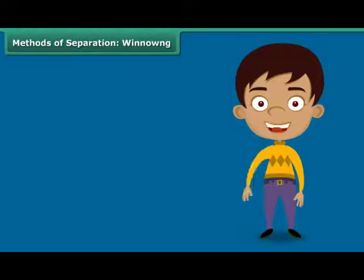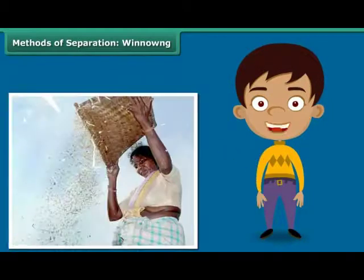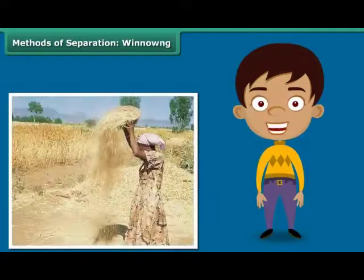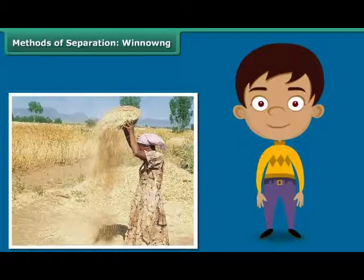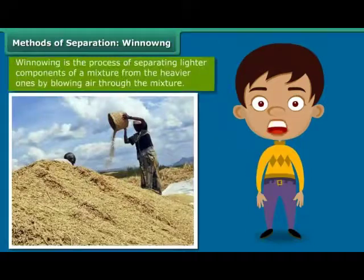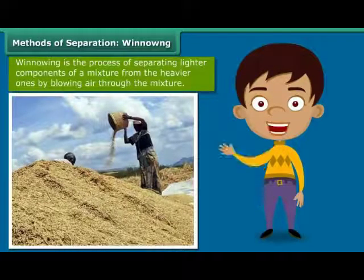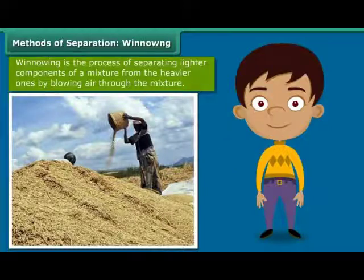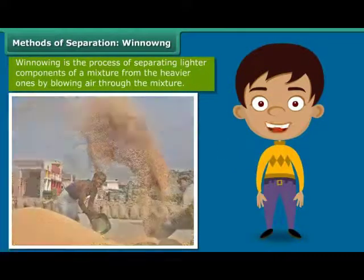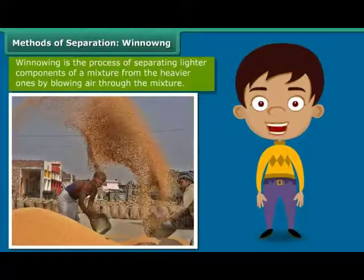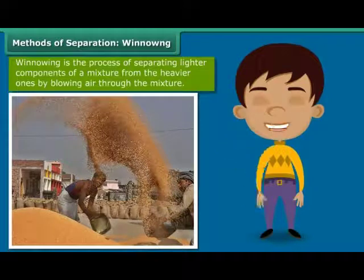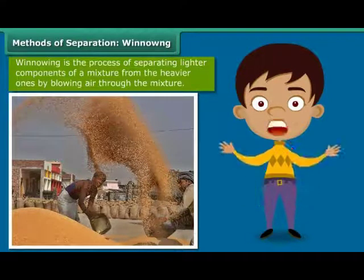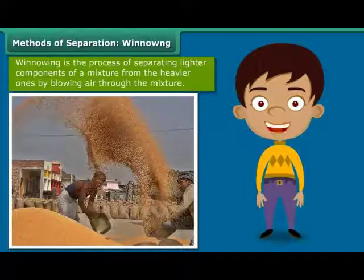During your numerous train trips through the countryside, you would have noticed women standing at a height, shaking a basket held over their heads continuously. They are separating the grain from the husk by simply allowing the wind to blow away the husk and other lighter impurities. The heavier grain falls down on the ground in a heap. This process of separating impurities from the grain by allowing a current of air to blow away the lighter impurities is known as winnowing.